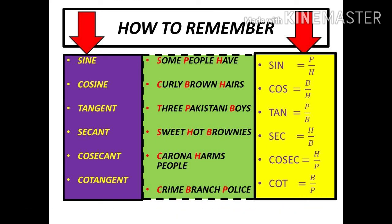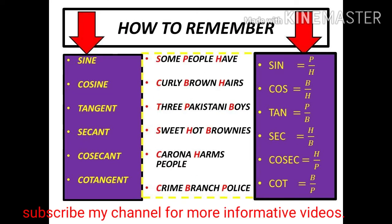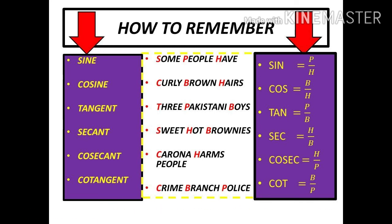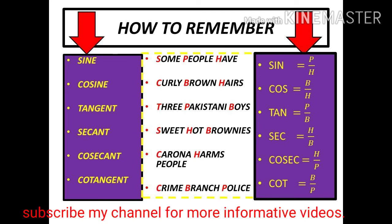Now it's time to learn the trigonometric ratio of cos. Cos is equal to "Curly Brown Hair". C is for cos, B is for base, and H is for hypotenuse. So cos equals base upon hypotenuse.